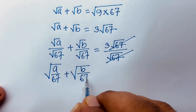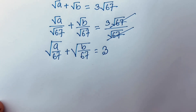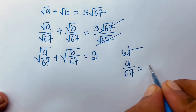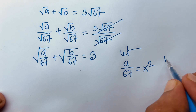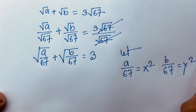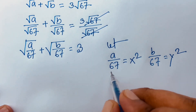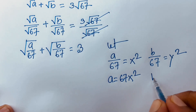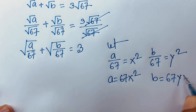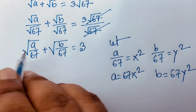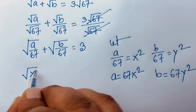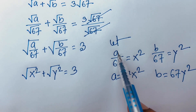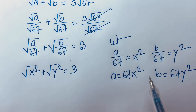So we get square root of (a/67) plus square root of (b/67) is equal to 3. Now let a over 67 equal x squared and b over 67 equal y squared. Then a equals 67x squared and b equals 67y squared. This gives us square root of x squared plus square root of y squared equals 3.